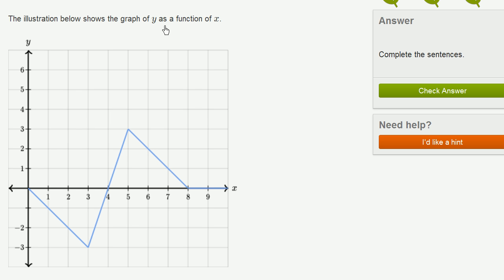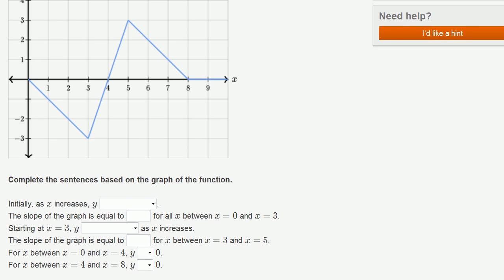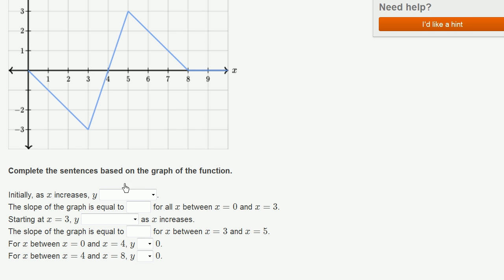The illustration below shows the graph of y as a function of x. So that's this graph right over here. And then they start to ask us some questions. Complete the sentences based on the graph of the function. So this axis is our y-axis, the vertical axis. Horizontal axis is x-axis.